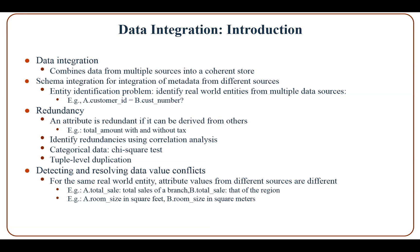Data integration combines data from multiple sources into a coherent store. The first problem is the entity identification problem: when combining data from multiple sources, how can you be sure a customer ID field in source A is the same as or different from a customer number in source B? Another problem is redundancy: an attribute is considered redundant if it can be derived from others — for example, total amount with and without tax. Redundancy can be identified using correlation analysis.